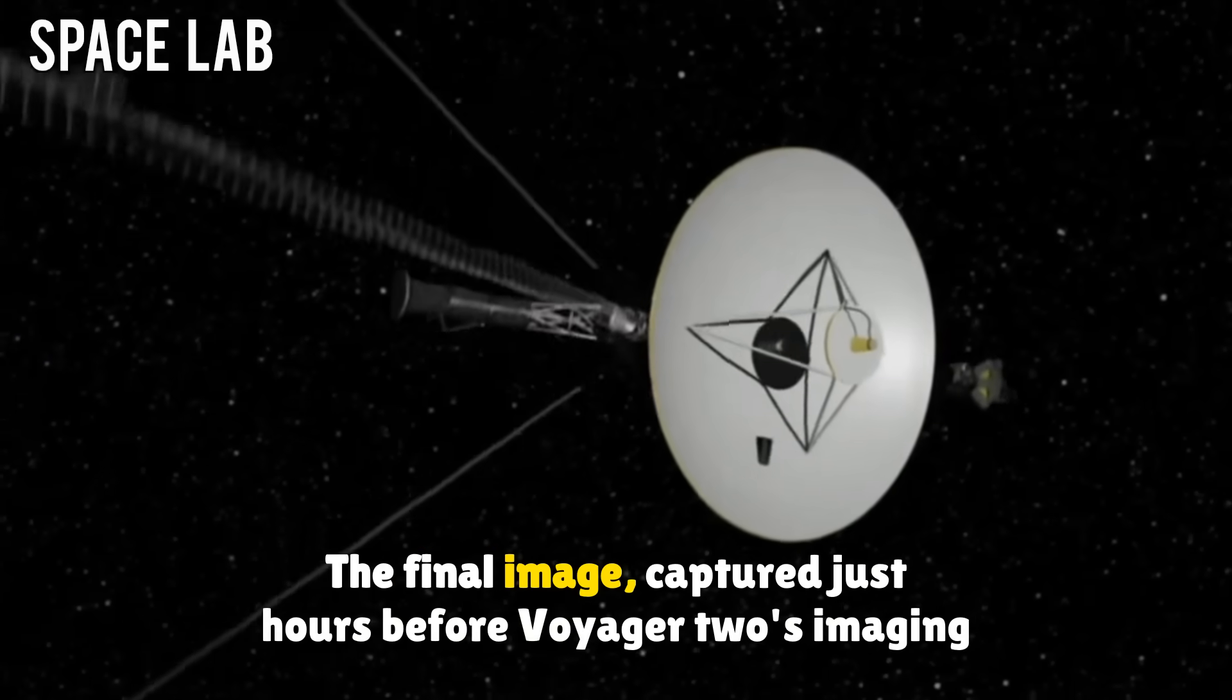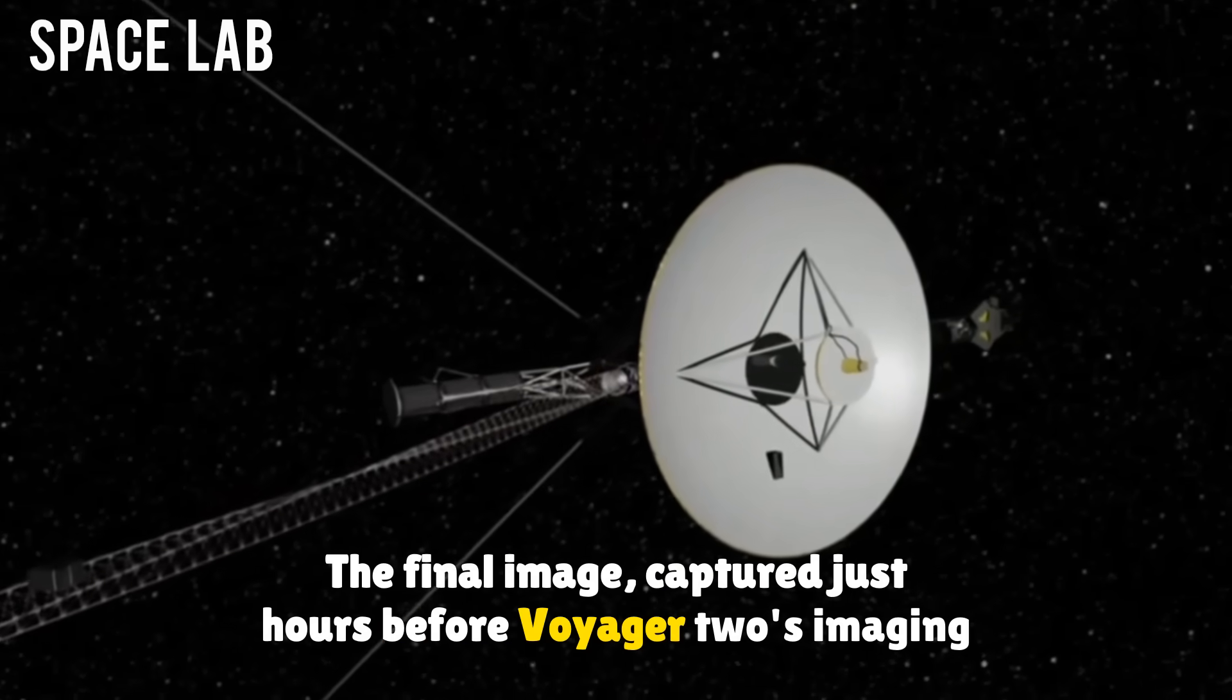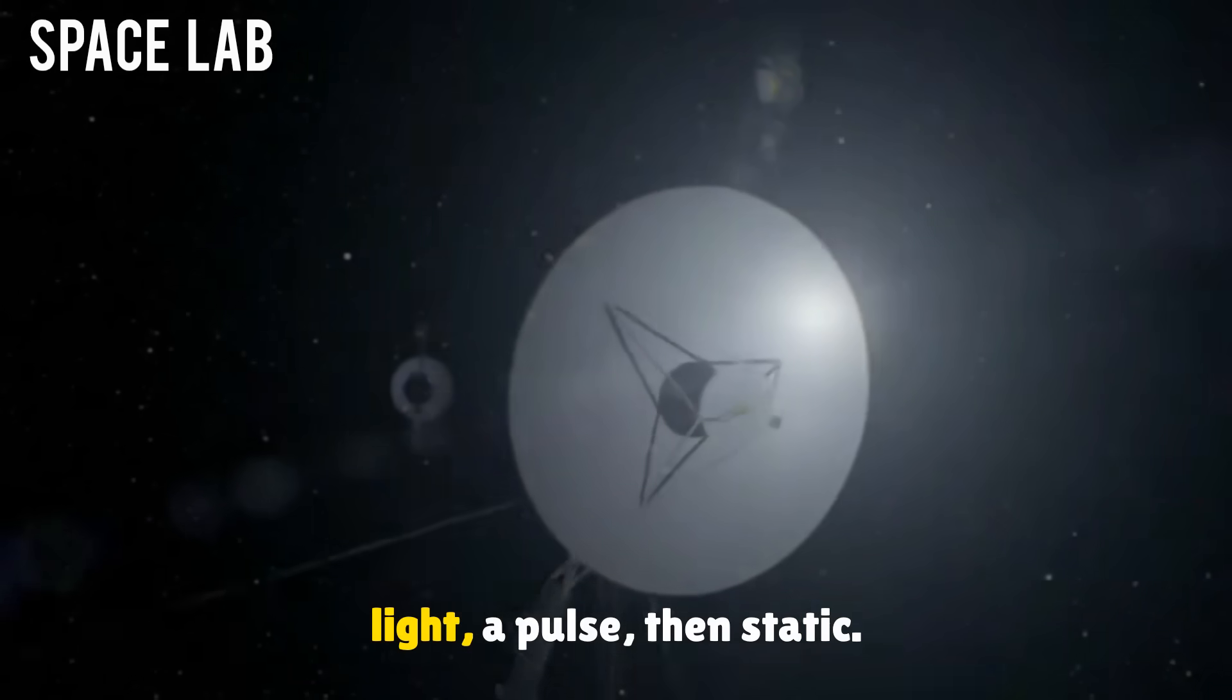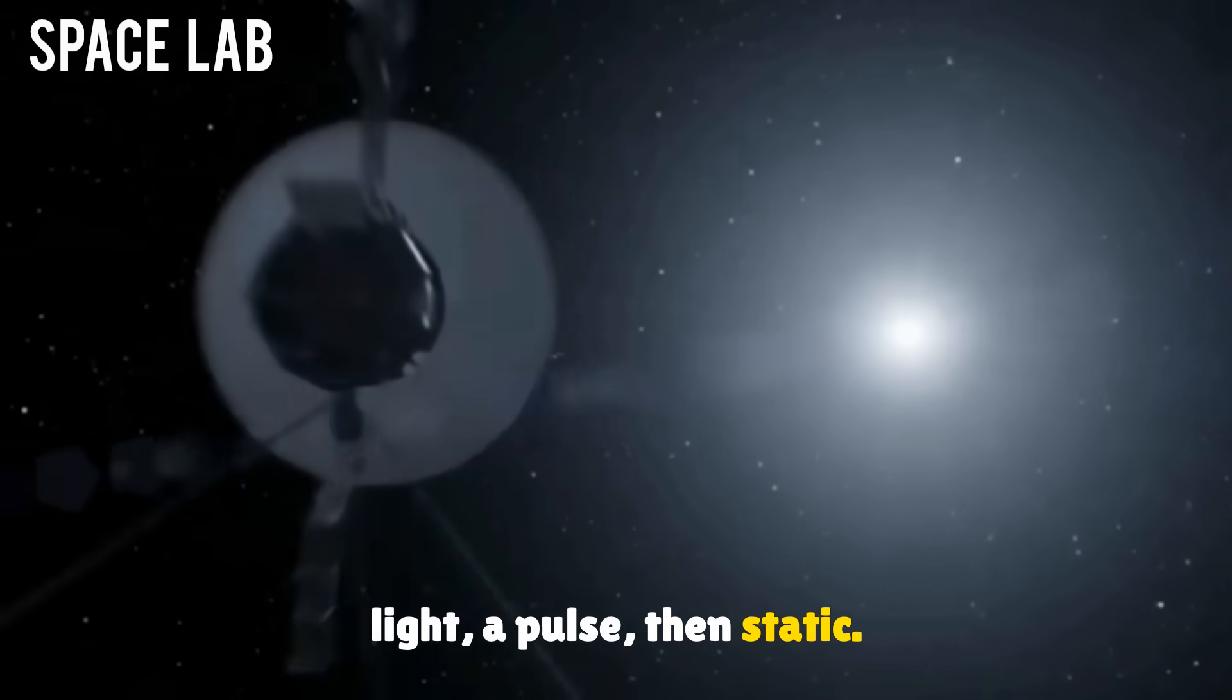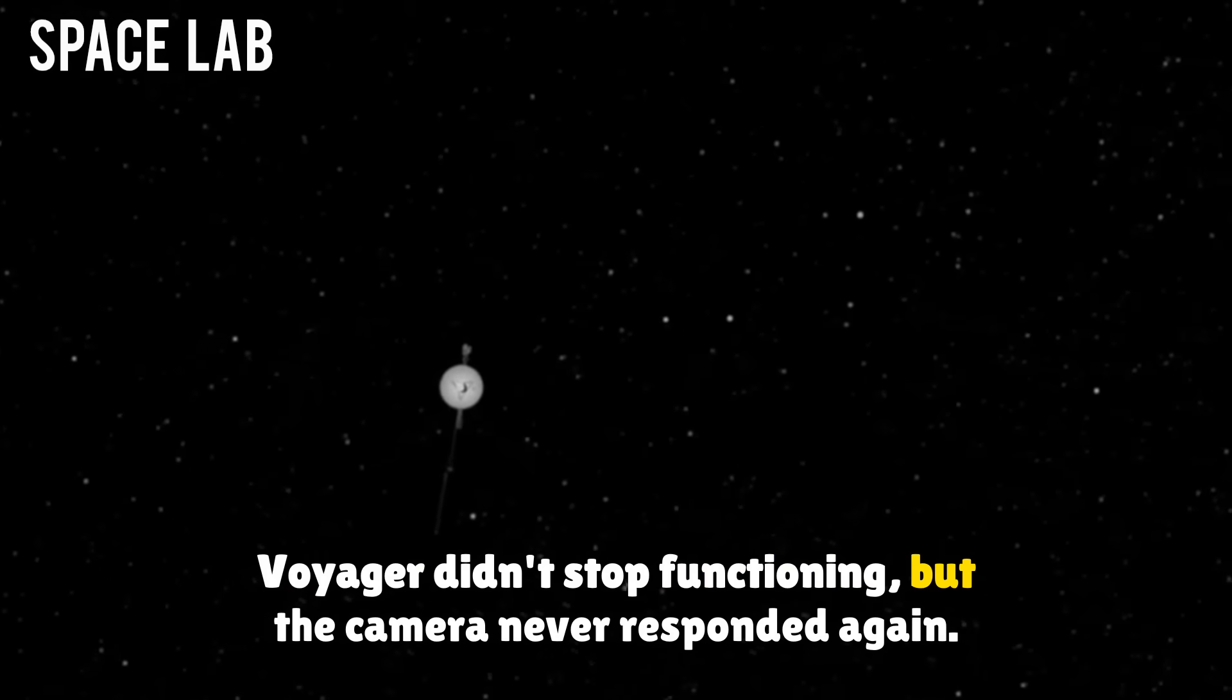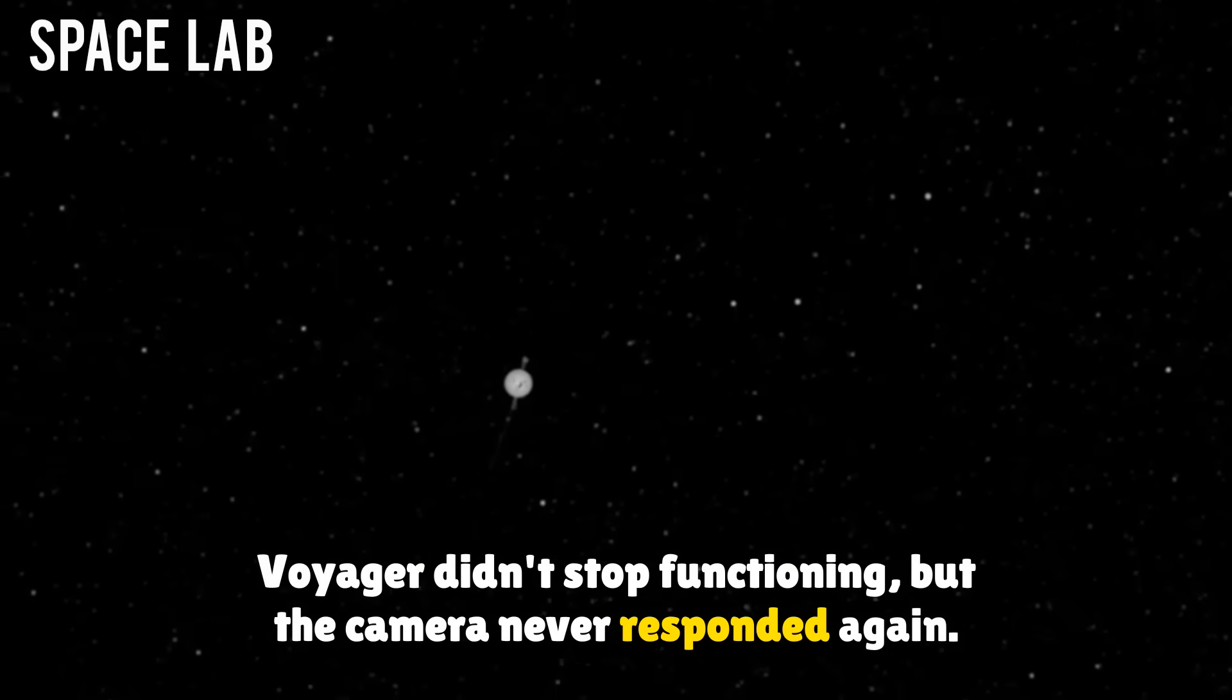The final image, captured just hours before Voyager 2's imaging system shut down for good, shows a frame filled with light, a pulse, then static. Voyager didn't stop functioning. But the camera never responded again.